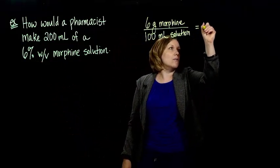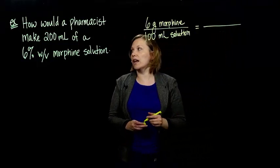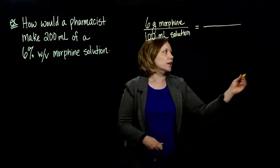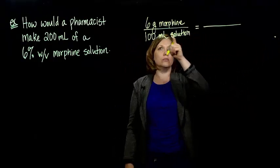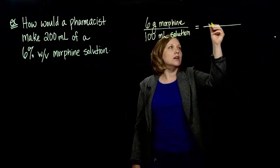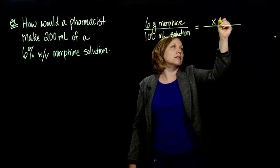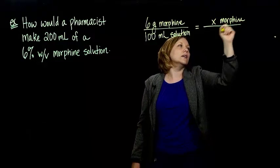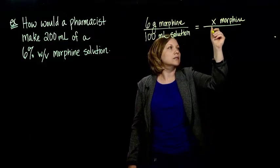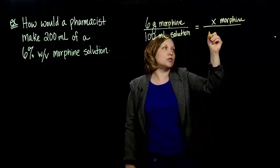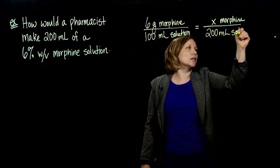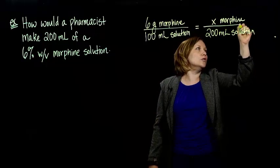And I want that to be, I want my new solution that I'm mixing up, my 200 milliliters to be in proportion to my 6 grams per 100. So it would be X morphine and it would be what we want, our 200 milliliters solution. That's our new total volume.